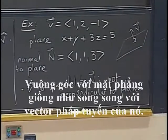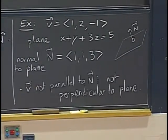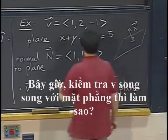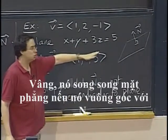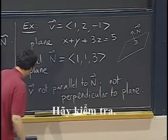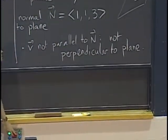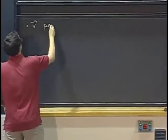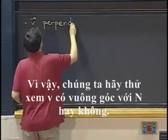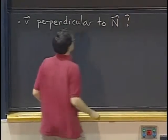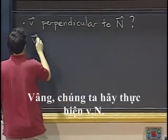So, it's not perpendicular to the plane. Being perpendicular to the plane is the same as being parallel to its normal vector. Now, what about testing if v is instead parallel to the plane? Well, it's parallel to the plane if it's perpendicular to n. Well, let's check that. So, let's try to see if it's perpendicular to n. Well, let's do v dot n.